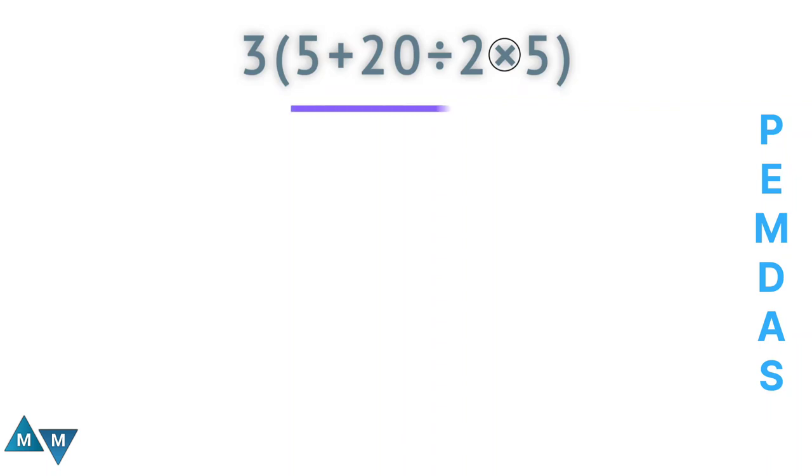What do I see first? From left to right. Well, in this case, I see division first. So this is what I have to do first. So 20 divided by 2 will be our first move, which equals 10.